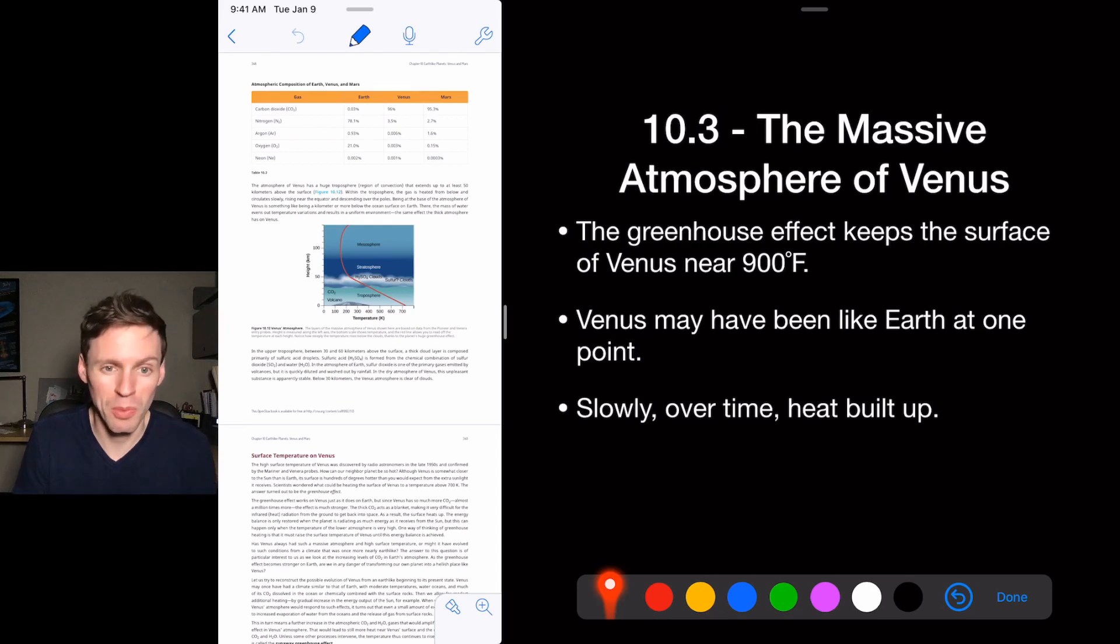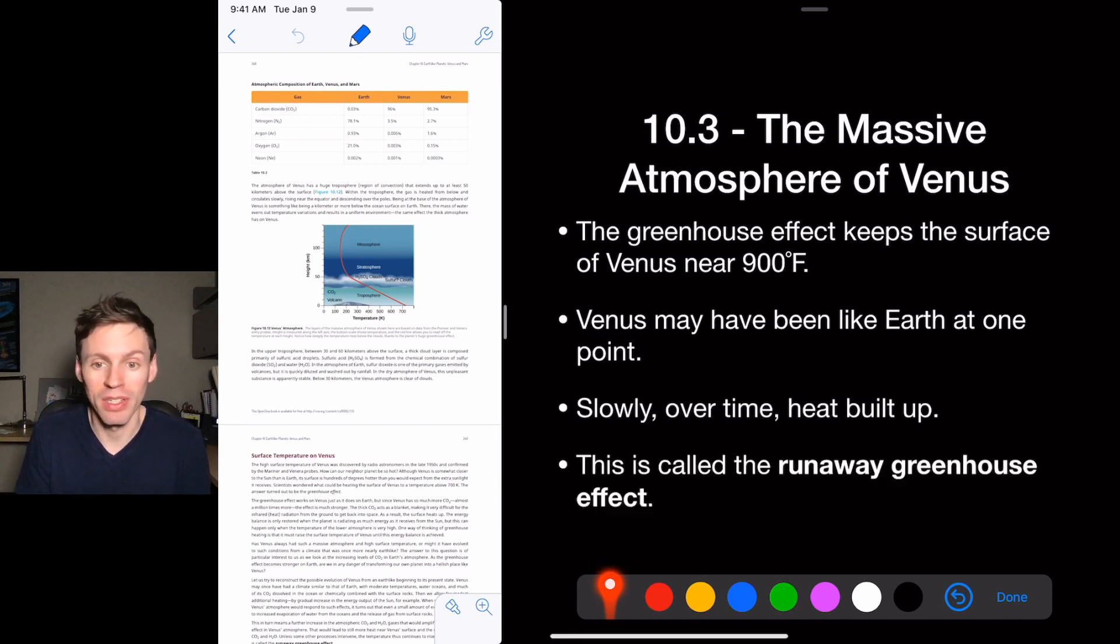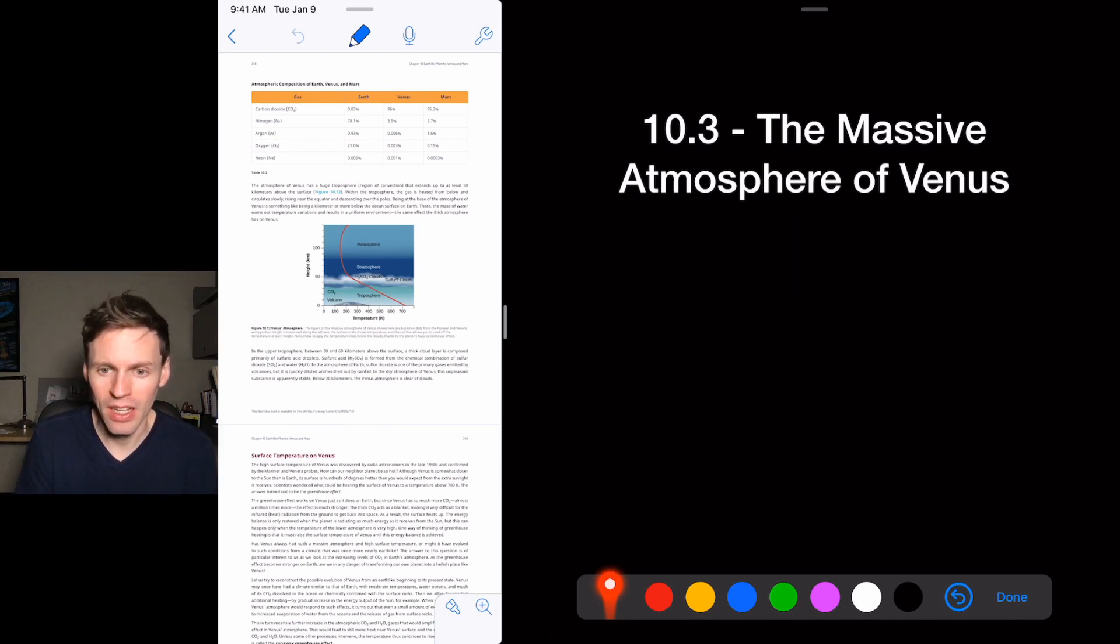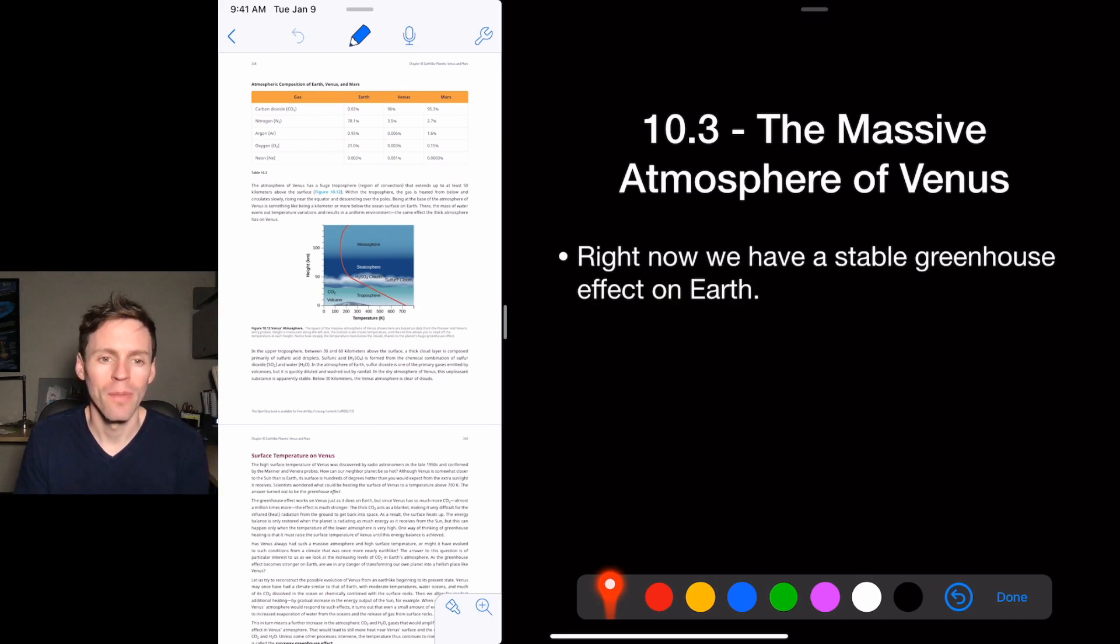So for example, maybe life didn't form quick enough and we didn't get rid of the carbon dioxide on Venus and therefore heat kept building up and then you had a runaway greenhouse effect. So the runaway greenhouse effect is something that happens over time. It's an evolution. It's not just suddenly it's hot. It takes a while.